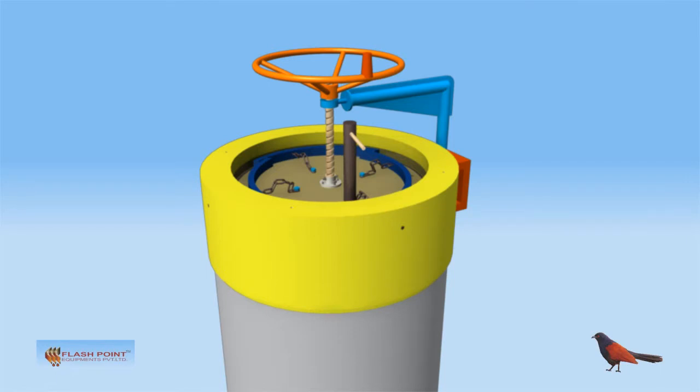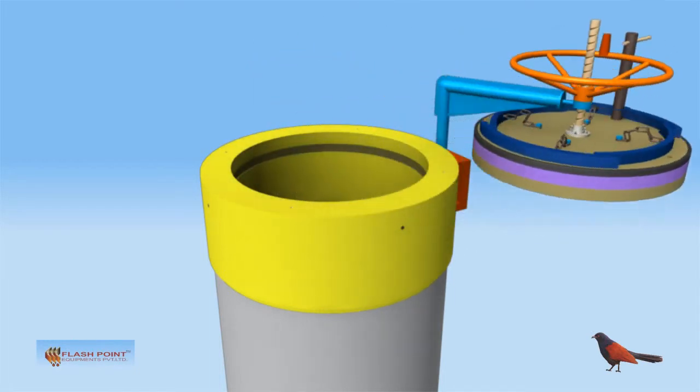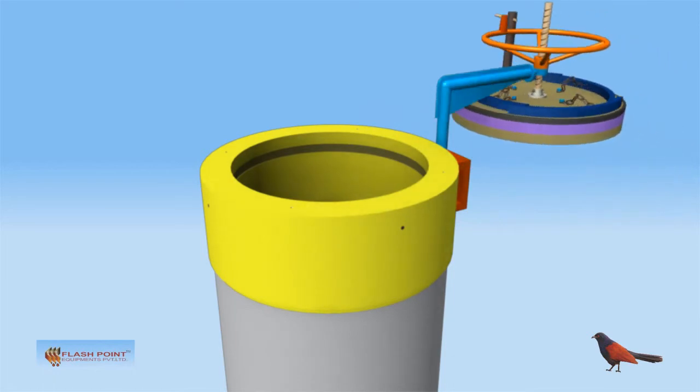Rotate the hand wheel in the anti-clockwise direction to raise the door to the full open position. Swing the david arm to completely open the closure for complete access to the vessel internals.